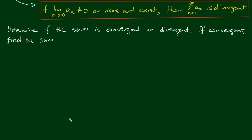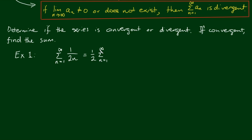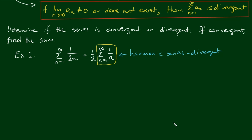In each of the following, we're going to determine if the series is convergent or divergent, and if it is convergent, we're going to find the sum. For the first one, we have the sum from n equals 1 to infinity of 1/(2n). We can write this as a half times the sum from n equals 1 to infinity of 1/n. We can see straight away that this is the harmonic series, which we've stated before as divergent. Half of something that doesn't approach a limit is still going to be a divergent series.